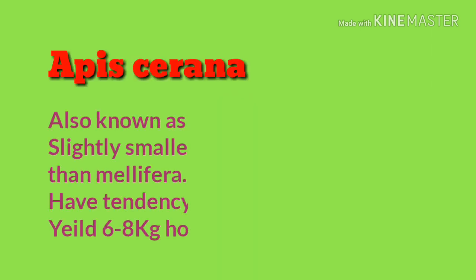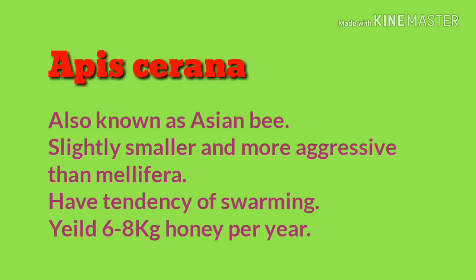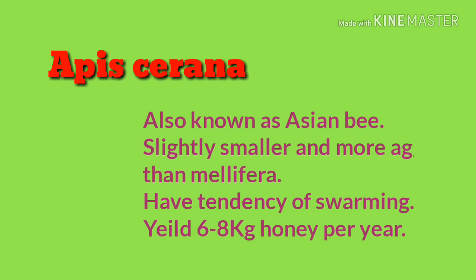Apis serrana indica, also known as Asian bee, is smaller than mellifera in size. Asian bees are more prone to swarming and absconding, and they are slightly more aggressive than mellifera. They yield 6 to 8 kilograms of honey per hive in a year. They do not store more honey, as they have other ways to reduce the effect of cold winters, due to which they need to eat less and hence store less honey compared to mellifera.